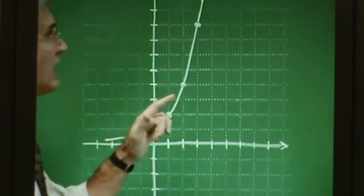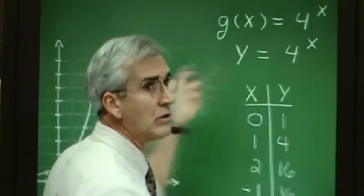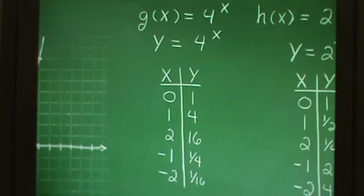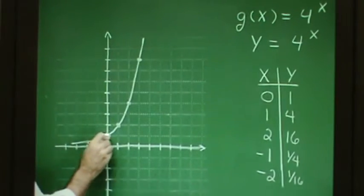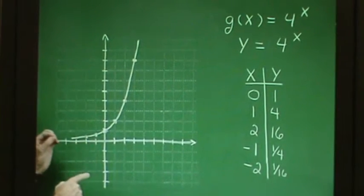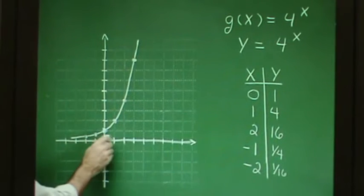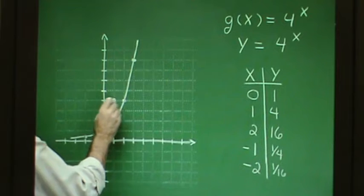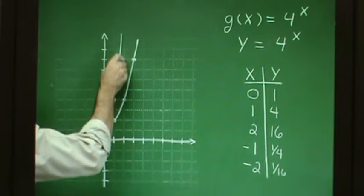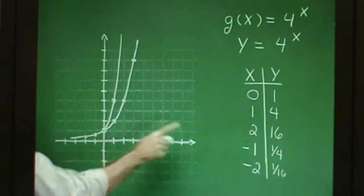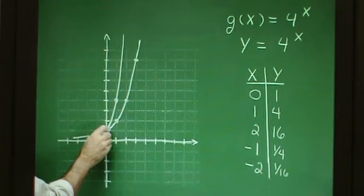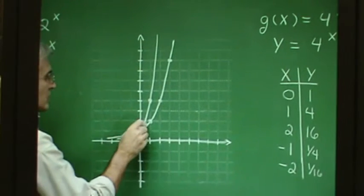Now let's change the base. Consider g(x) equals 4 to the x power. Building a table of values and plotting: 0 goes to 1 — the same prevailing point. Then 1 goes to 4, 2 goes to 16 (which is off the graph), making the curve rise sharply. Negative 1 goes to 1/4, and negative 2 goes to 1/16, getting very close to the x-axis quickly.